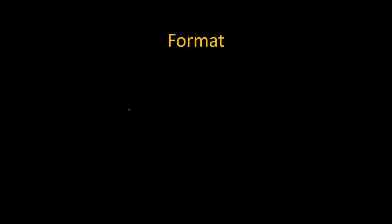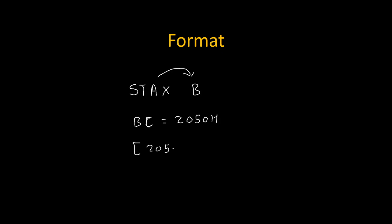Let's take one example to understand it clearly. Suppose the instruction written is STAX B. What will happen is it will transfer the content of the accumulator. We check the value of the BC register pair — suppose BC is 2050h. This 2050h will be treated as a memory location, and on memory location 2050h, data is 33h. The content of the accumulator is 22h.